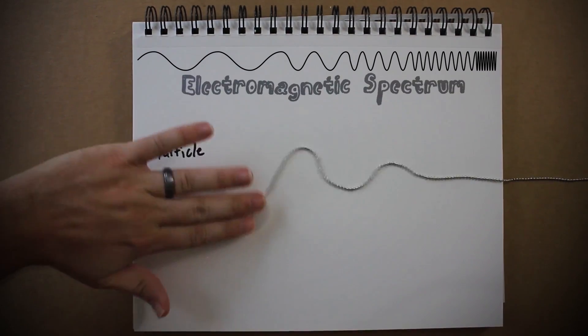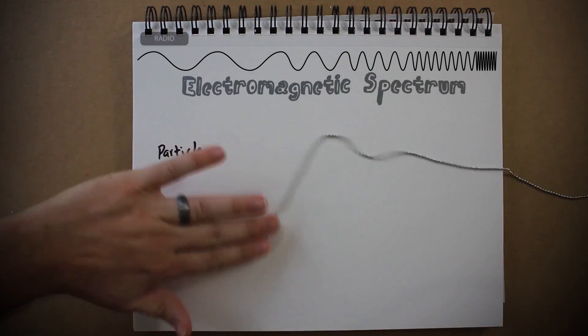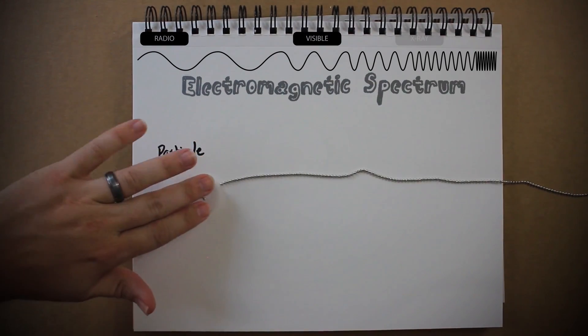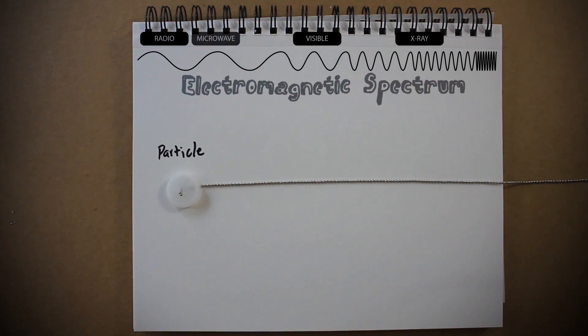The different wavelengths are all contained within the electromagnetic spectrum, which contains radio waves, light rays, x-rays, and, you guessed it, microwaves.